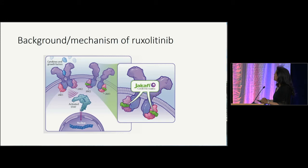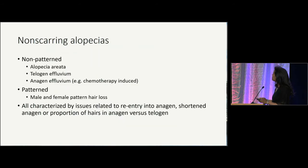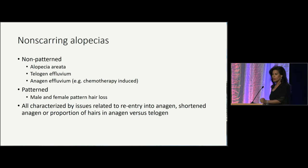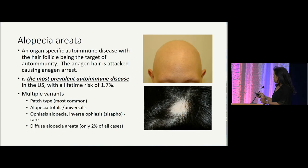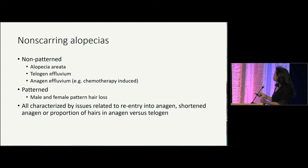We've had lots of discussion about the mechanism of action of these drugs, so I'm going to move on to talk about the types of hair loss. Alopecia in general can broadly be divided into non-scarring and scarring alopecias. I'll start with the non-scarring alopecias, which includes alopecia areata, as well as some other hair loss types like telogen effluvium, antigen effluvium, and also the patterned hair loss.